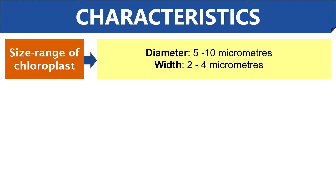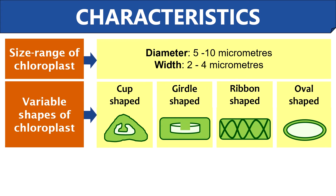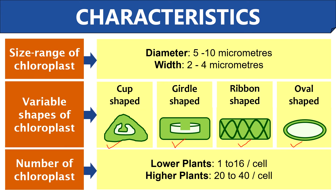Now let us discuss some general characteristics of a chloroplast. The diameter of chloroplasts in higher plants ranges between 5 to 10 micrometers and the width ranges between 2 to 4 micrometers. Chloroplasts exist in variable shapes, but in plant cells they are generally oval shaped. Chlamydomonas possesses a cup-shaped chloroplast, Ulothrix contains a girdle-shaped chloroplast, and Spirogyra contains a filamentous or ribbon-like chloroplast. There are nearly 1 to 16 chloroplasts per cell in lower plants and 20 to 40 chloroplasts per cell in higher plants.